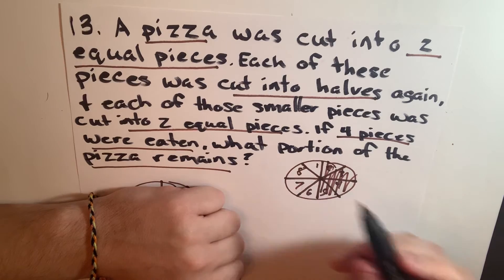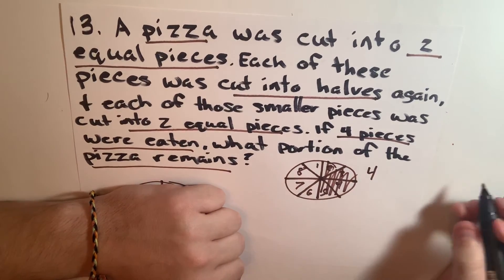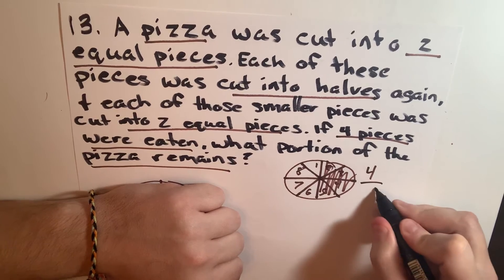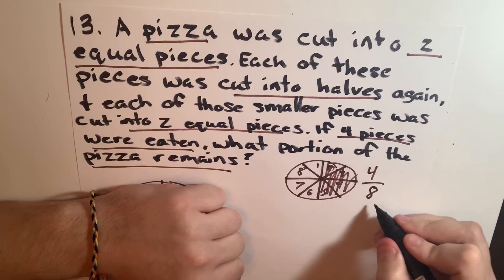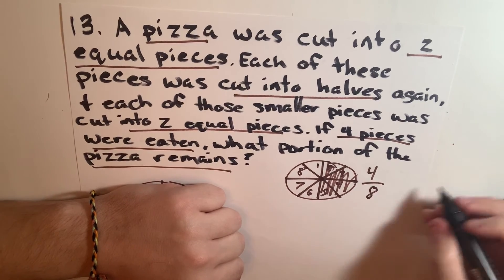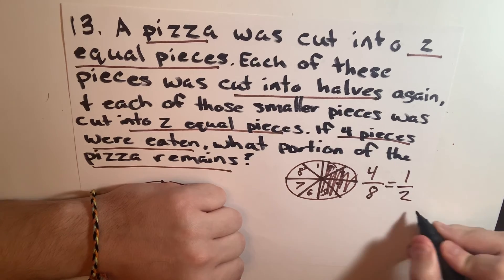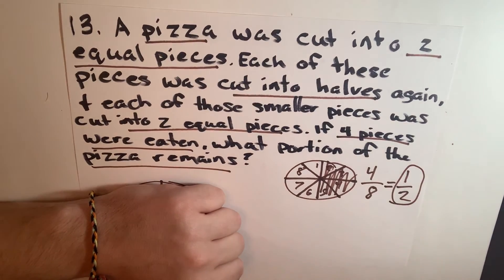What portion of the pizza remains? So if there are four slices left over out of eight in total, that would be your answer. But because both of these are divisible by two, we can actually simplify farther to be one half remains. And that would be your answer.